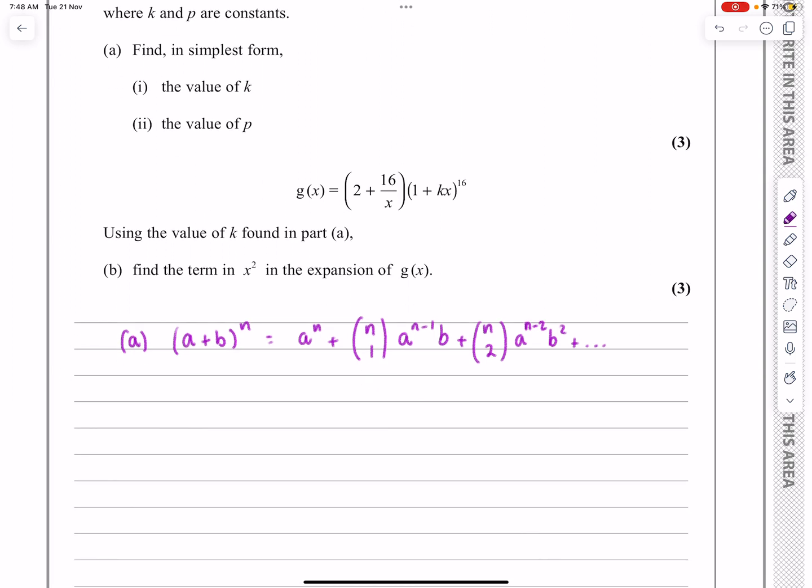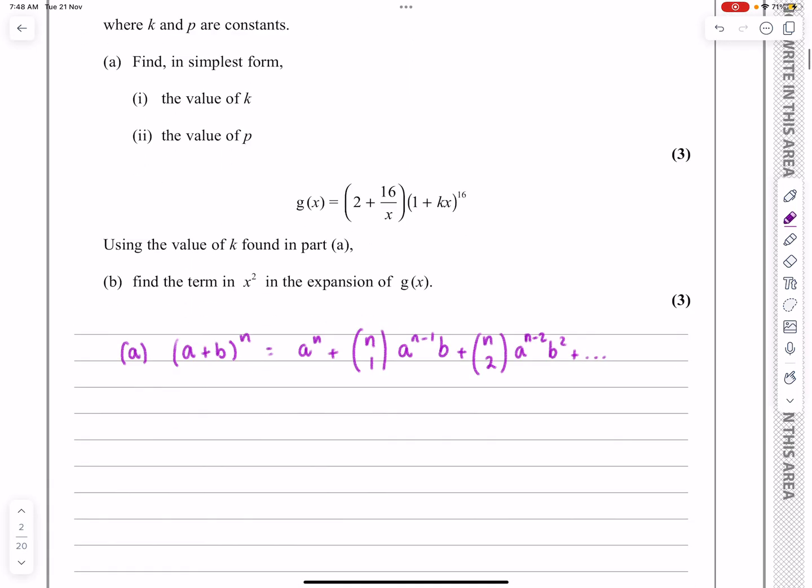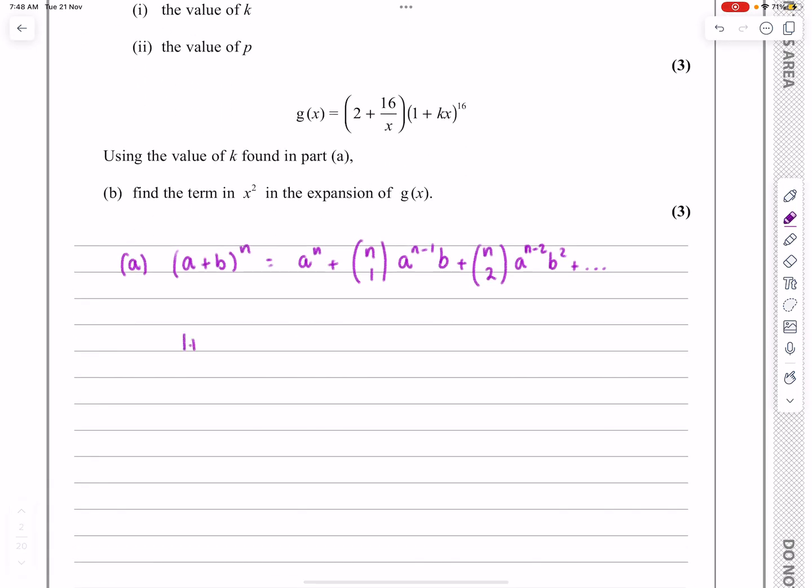All we've got to do is to think that in my version, I've got (1 + kx)^16. So that's going to be really nice because a is going to be equal to 1, so I can almost ignore 1^n. b is slightly more problematic, it's kx, so I've got to be careful when I'm putting that in, and n is going to be equal to 16.